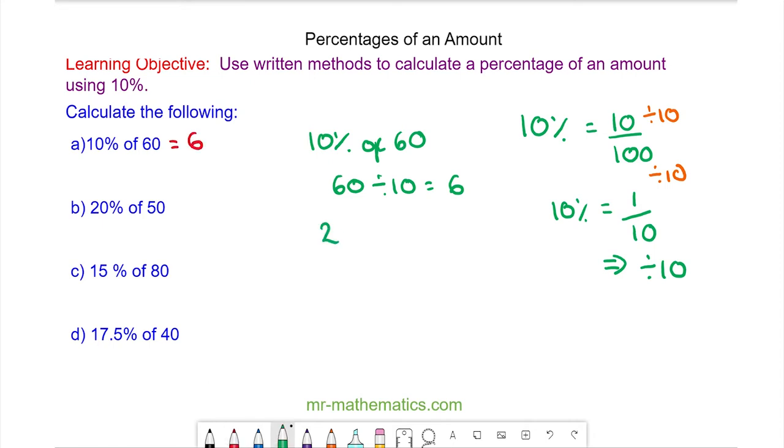Question b: 20% of 50. Again we start by working out 10% which is 50 divided by 10. So 10% is equal to 5. But to work out 20% we need to multiply the 10% by 2. So we do the same to the 5. So 20% of 50 is 5 times 2 which is 10.